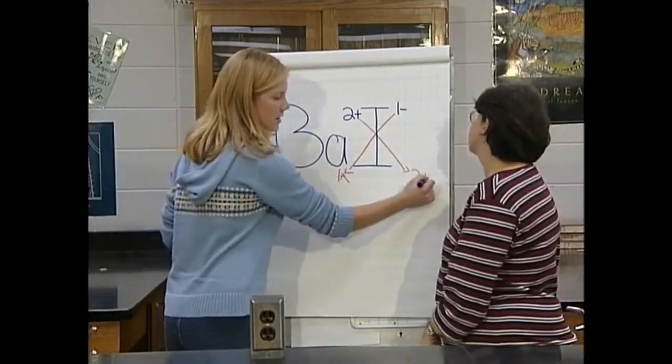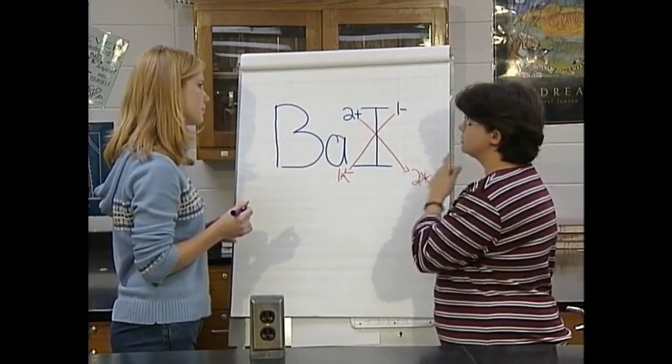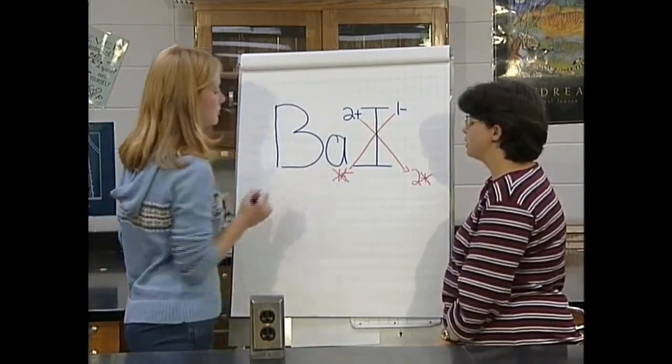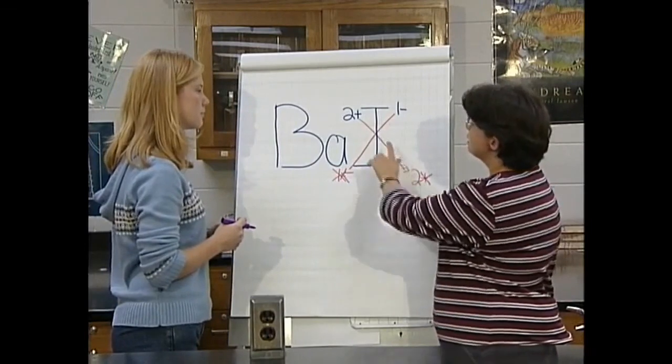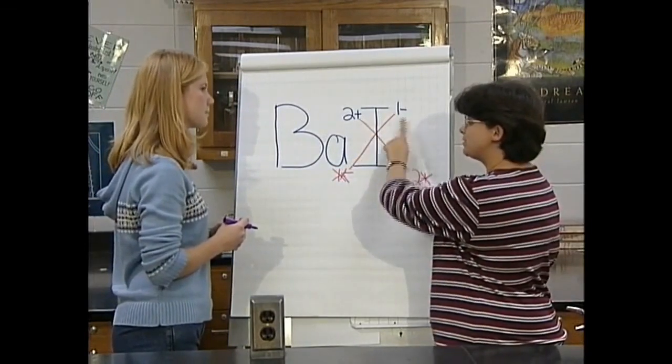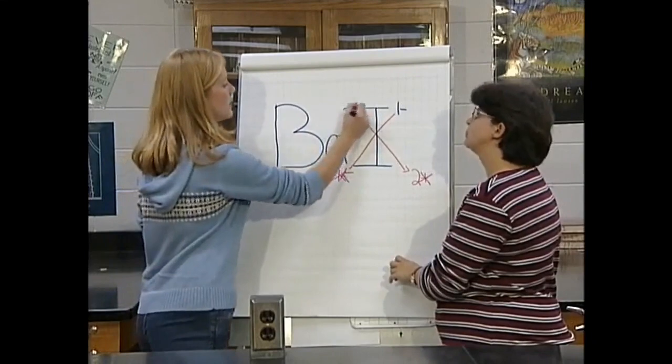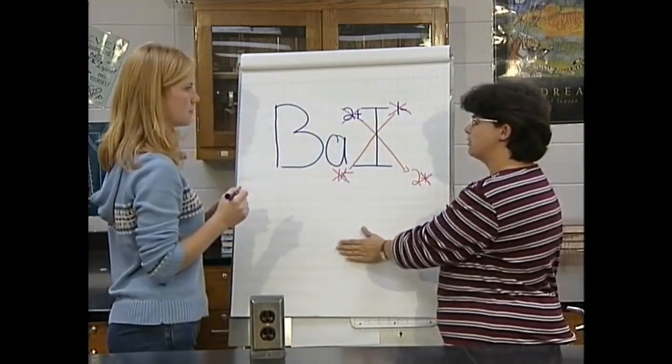Sometimes a mistake teaches an important lesson. When you crisscross, you have to remember what the subscripts tell us — they tell us how many of each ion we have. So you only want to use the absolute value of the charges when you crisscross; don't keep the negatives or positives. Also, a subscript of 1 is always understood, so we don't need to write it. Finally, charges are written when figuring out the subscripts, but the final formula does not include the charges.